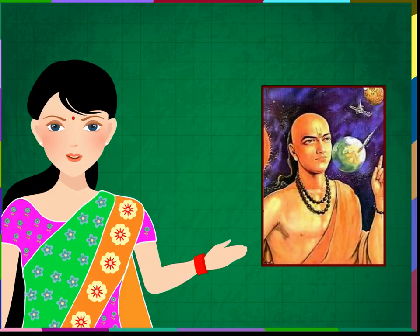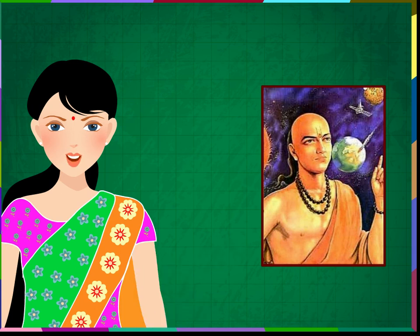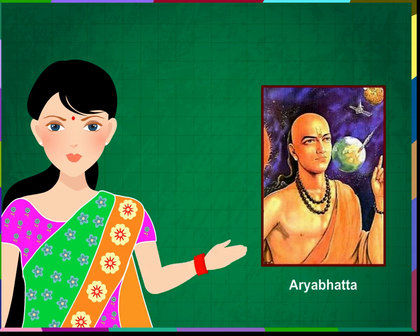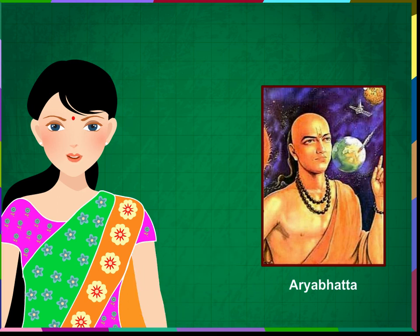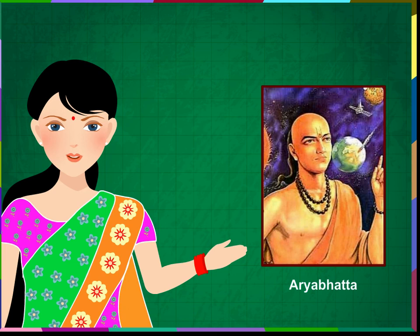He is a great mathematician. His name is Aryabhata. He invented zero as well as discovered many things in maths.